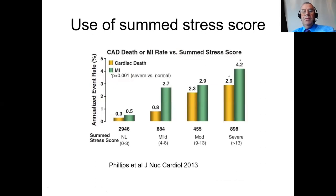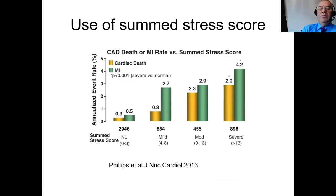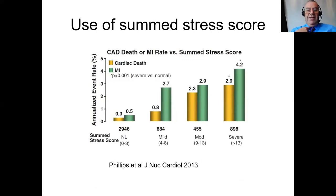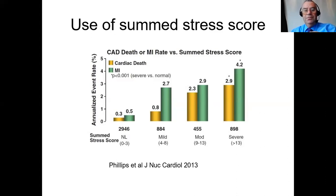Summed stress scores have been shown to correlate with increasing chance of both MI and cardiac death - the higher the stress score, the higher your chance of dying. All these are prognostic factors you can get from an MPS. Some machines and programs even have an estimated death rate on the bottom, which may not be entirely accurate because there are other factors, but it gives you an idea of the risks.